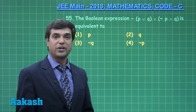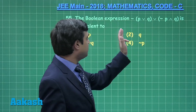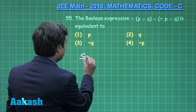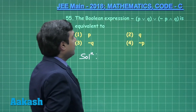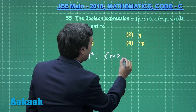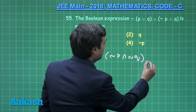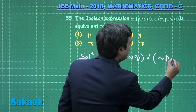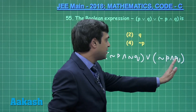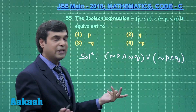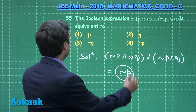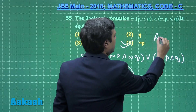Taking question number 55, a Boolean expression is given and we need to find its equivalent. The negation goes inside making it (¬p ∧ ¬q). Keeping the other term the same as (¬p ∧ q), then OR-ing between the two, we are left with simply ¬p. The correct option is 4.